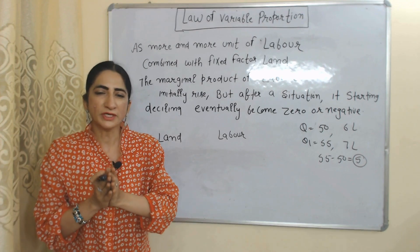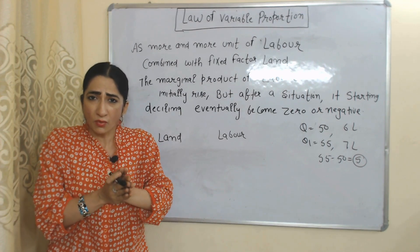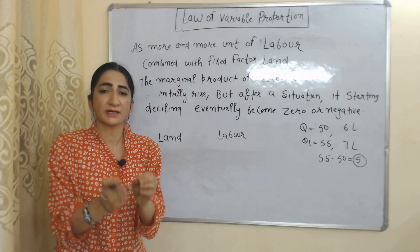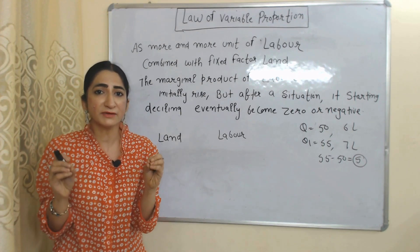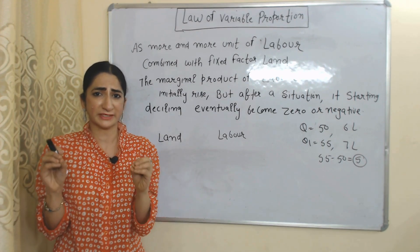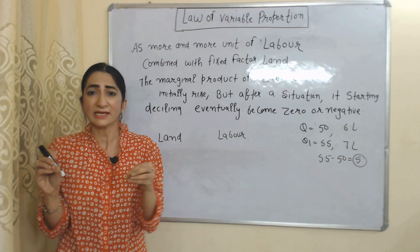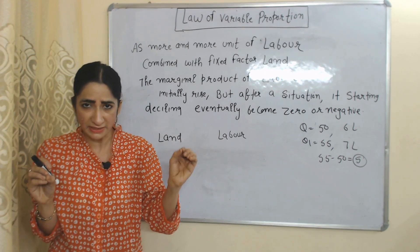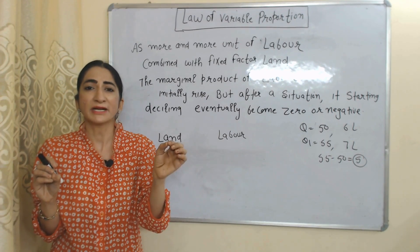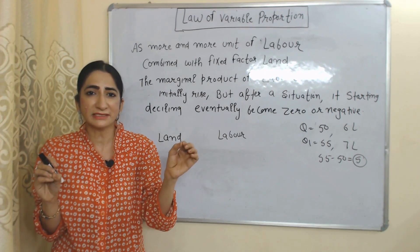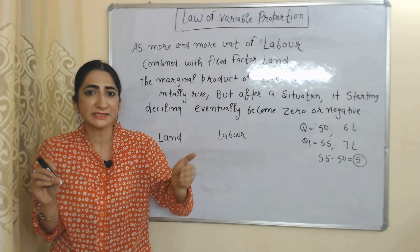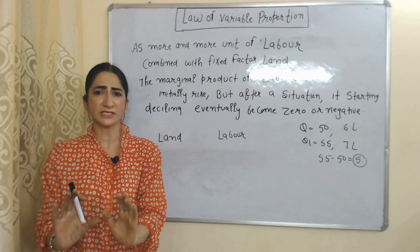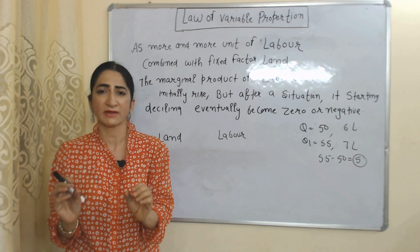According to this law, as more and more units of labor are combined with a fixed factor — land — then initially the marginal product of labor increases. But after a certain time period, it starts declining and eventually becomes zero or negative.